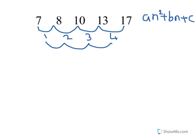In the second difference, I go from 1 to 2, so that goes up 1. To get from 2 to 3, I got 1. To get from 3 to 4, I got 1. So the second difference is constant. That means we have a quadratic.